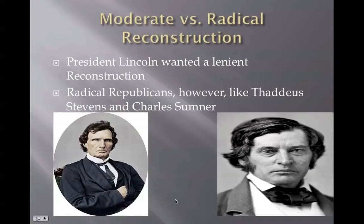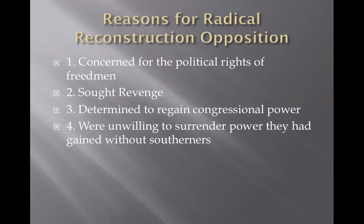On the other side, people like Thaddeus Stevens and Preston Brooks were Radical Republicans who wanted to make it difficult for the Confederacy to come back. One of their concerns was the political rights of freedmen — slaves who had been freed as a result of the 13th Amendment, which was passed and ratified in April of 1865.